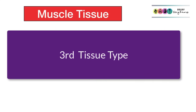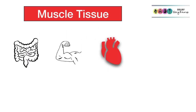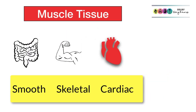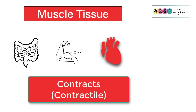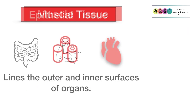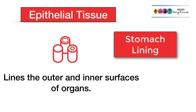Other connective tissue examples are cartilage and adipose tissue, otherwise known as fat. The third animal tissue type is muscle tissue, of which there are three types: smooth muscle, skeletal muscle, and cardiac muscle — and muscle contracts. The final type of animal tissue is epithelial tissue, which lines the outer and inner surfaces of organs like the stomach lining and the skin, but it also has more complex functions.